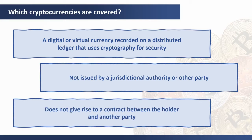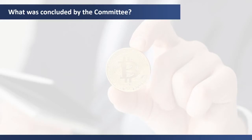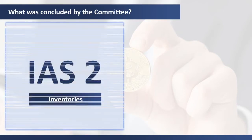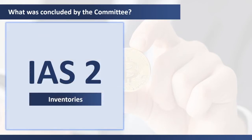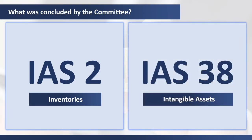To make a long story short, the committee concluded on two possible treatments for cryptocurrencies. When the cryptocurrency is held for sale in the ordinary course of business, IAS 2 on inventories applies. If that standard is not applicable, all other cryptocurrencies are covered by IAS 38 on intangible assets.